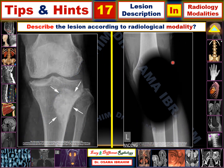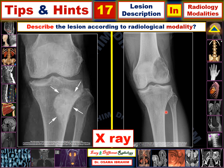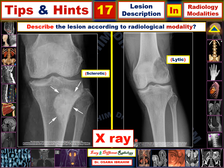Now describe these two lesions from an X-ray image. In X-ray we describe lesions by opacity using different radiological terms. This one can be described as a sclerotic bony lesion, while this one can be described as a lytic bony lesion — or increased and decreased opacity respectively — since X-ray depends on opacity.